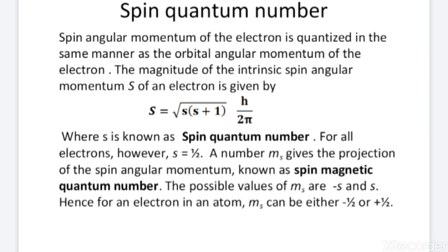The spin angular momentum of the electron is quantized in the same manner as the orbital angular momentum. The magnitude of the intrinsic spin angular momentum S is given by: S equals root of s(s+1) times h upon 2π, where small s is the spin quantum number. For all electrons, s equals 1/2. The number ms gives the projection of the spin angular momentum, known as the spin magnetic quantum number. The possible values of ms are minus s and plus s, so for an electron, ms can be either minus 1/2 or plus 1/2.